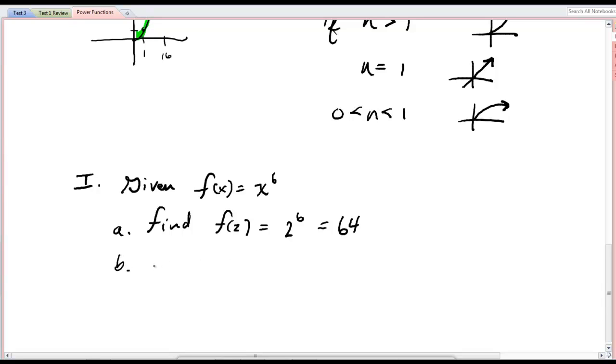But you could also be asked, find x such that f(x) equals 80. Now that's a little more involved, because now we're looking for the x that makes that possible. So what do we do? We're looking for x such that x to the 6 is 80, so we're solving this.